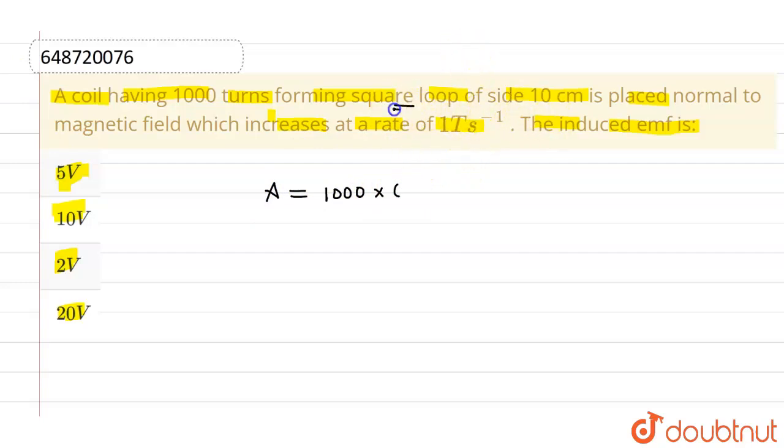Now since this is a square loop, its area will be side square, that means 0.1 square after converting it into meter. So area is coming out to be, since this is 1 by 100, we will be having 10 meter square as the area.